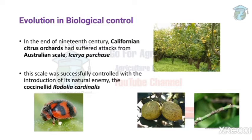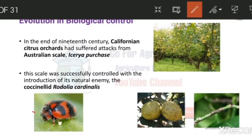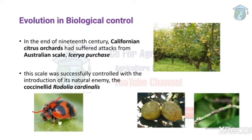Next is the evolution of biological control. In the 19th century, Australian scale pest affected the Californian orchards. To control this pest, a natural enemy called Rodolia cardinalis was introduced. This natural enemy was used to control the Australian scale pest affecting Californian orchards.